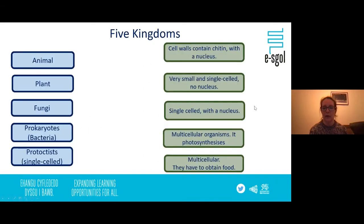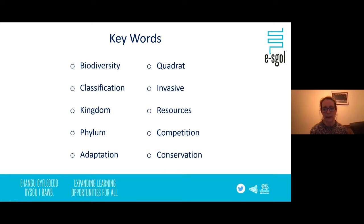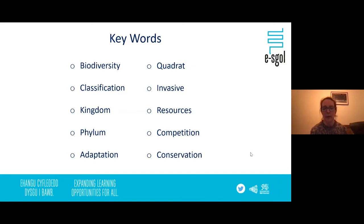A quadrat is another key word we use when sampling — we use it to investigate plants and plant abundance within a particular area. We're also looking at resources and competition for resources that animals and plants may face within their habitat. Invasive species are animals or plants that move into an area, cause a problem, take over and reduce biodiversity. And finally, conservation is important to preserve and look after not just animals and plants but also their habitat to make sure they are able to survive.